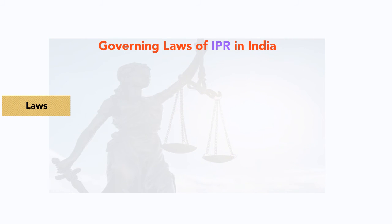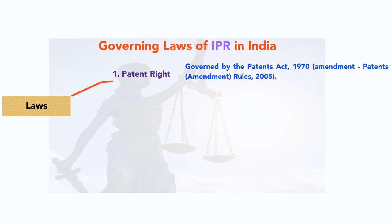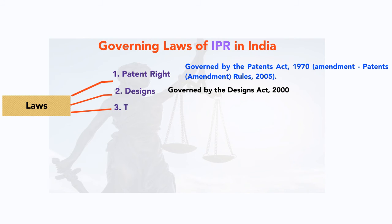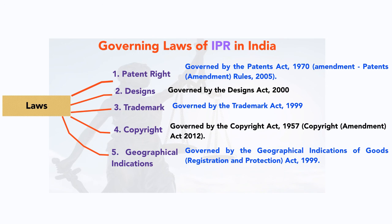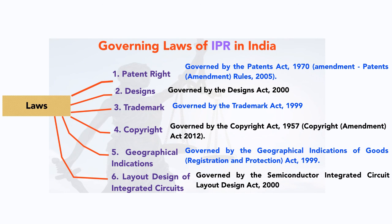Now let's check out the governing laws in India for all these intellectual property rights. Patent rights are governed by the Patents Act 1970, however it was last amended in 2005 and is known as the Patents Amendment Rules 2005. Designs are governed by the Designs Act 2000. Trademark is governed by the Trademark Act 1999. Copyright is governed by the Copyright Act 1957, but it was last amended as the Copyright Amendment Act 2012. Geographical indications are governed by the Geographical Indications of Goods (Registration and Protection) Act 1999. And lastly, layout design of integrated circuits is governed by the Semiconductor Integrated Circuit Layout Design Act 2000.